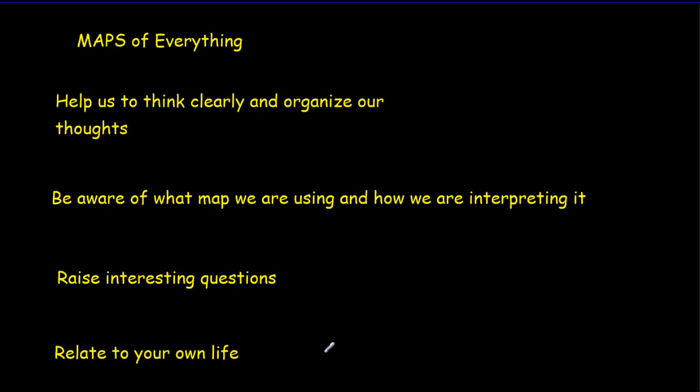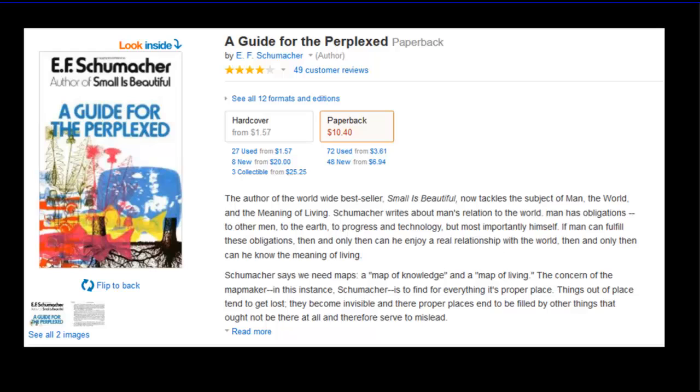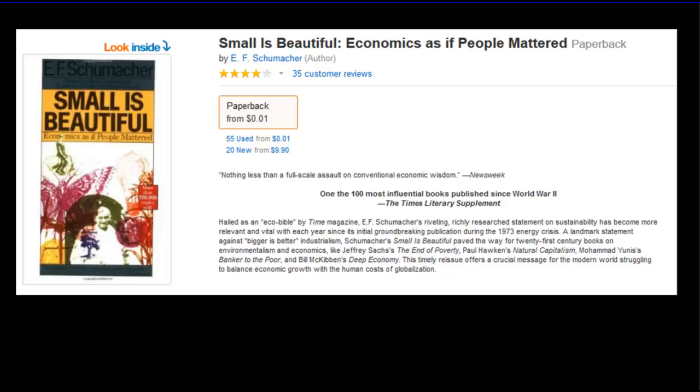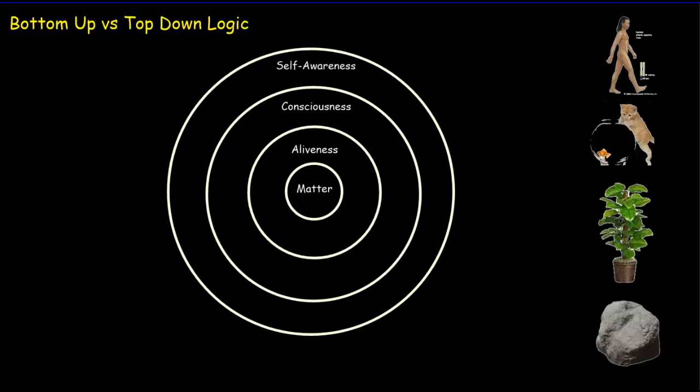I think the very best TOK essays always involve the person really being able to relate the ideas and concepts to their own personal life experiences. I'm not a TOK teacher, I haven't even read very many philosophy books, but this was one that I read and really enjoyed. It's by EF Schumacher, A Guide for the Perplexed, and my maps of everything are going to by and large come from this book. Schumacher was an economist who wrote Small is Beautiful, written in the 1970s about microeconomics.